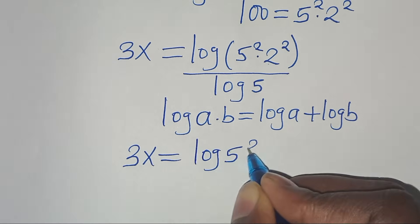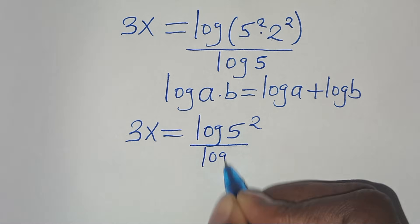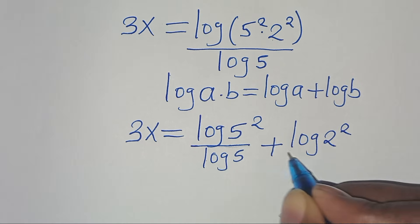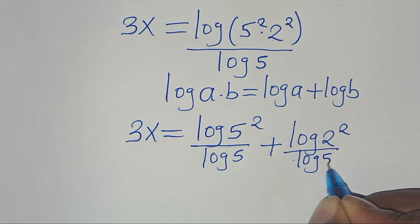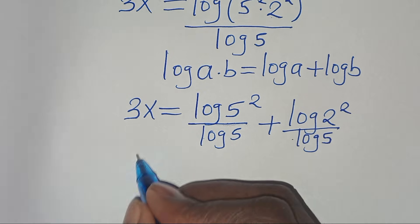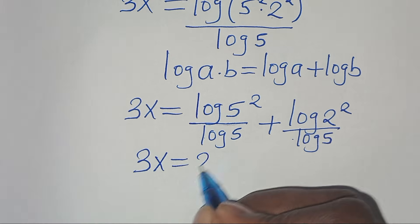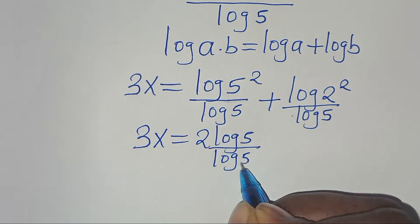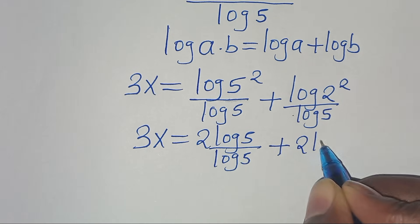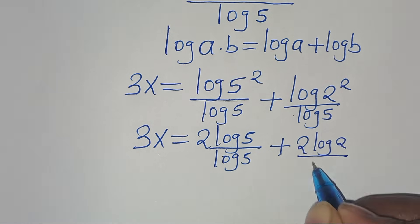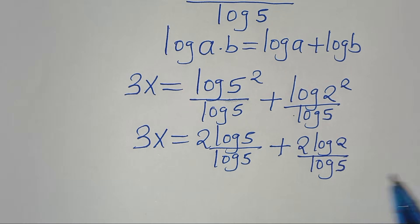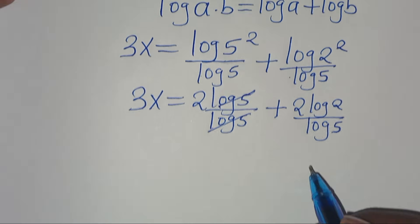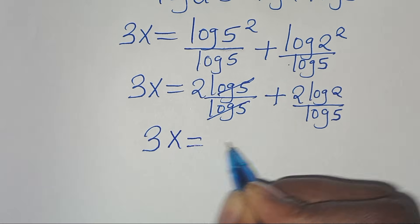We have 3x equals log of 5 squared divided by log 5, plus log of 2 squared divided by log 5. Applying the power property, this becomes 3x equals 2 log 5 divided by log 5, plus 2 log 2 divided by log 5. Simplifying log 5 and log 5, we have 3x equals 2 plus 2 log 2 divided by log 5.